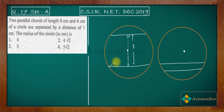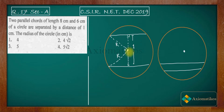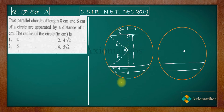Let us join the center O to the endpoints of each chord — those will be the radii. Now I want to use the property of a circle: the perpendicular from the center to a chord bisects the chord. So if one chord is 8 centimeter, this half will be 4 centimeter. Similarly, for the 6 centimeter chord, this half will be 3 centimeter. Both form right angle triangles.